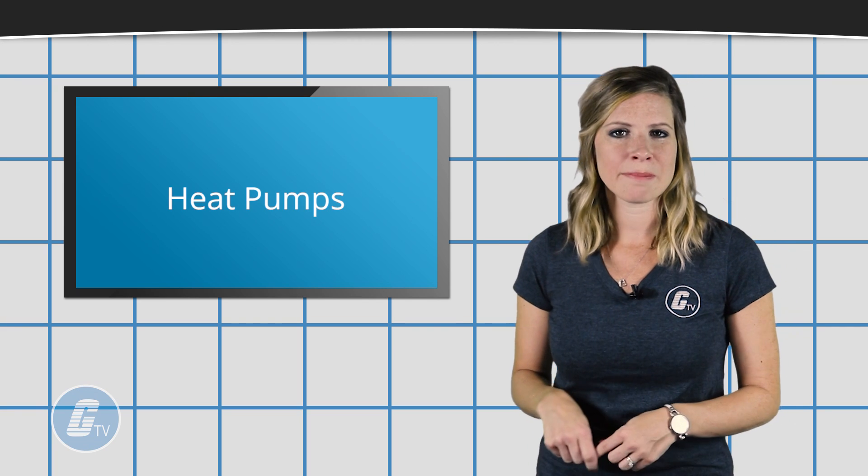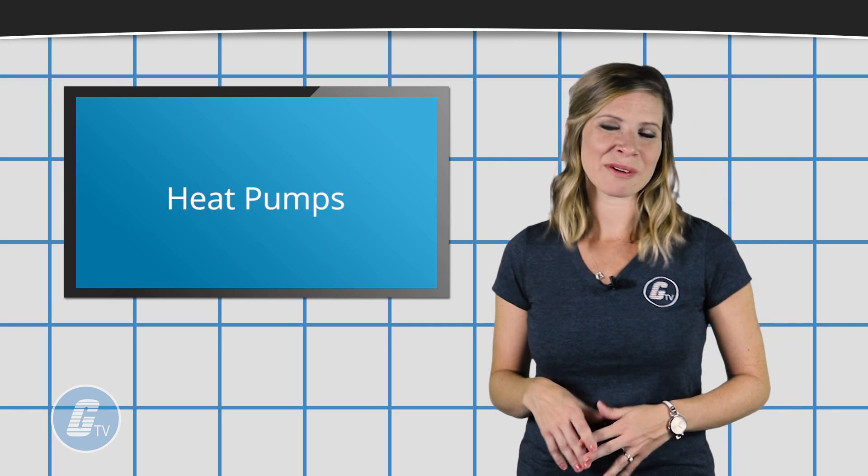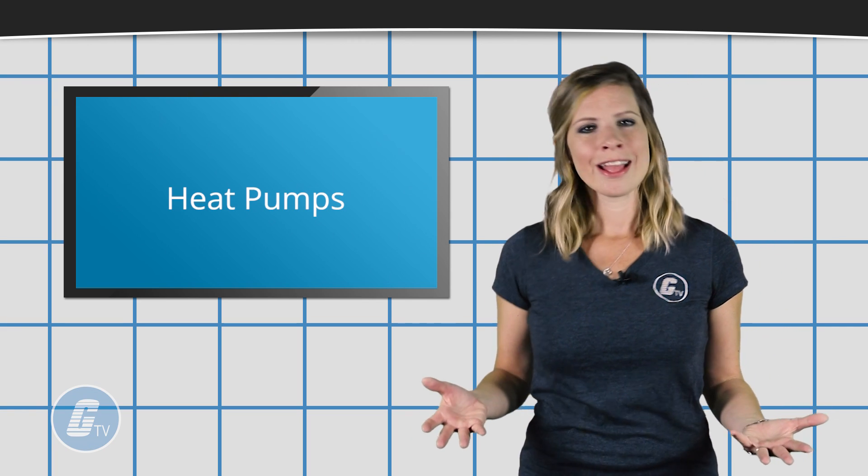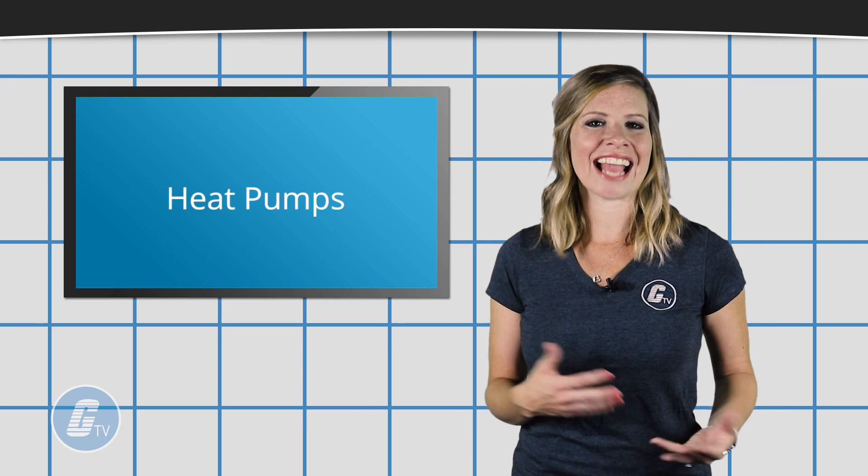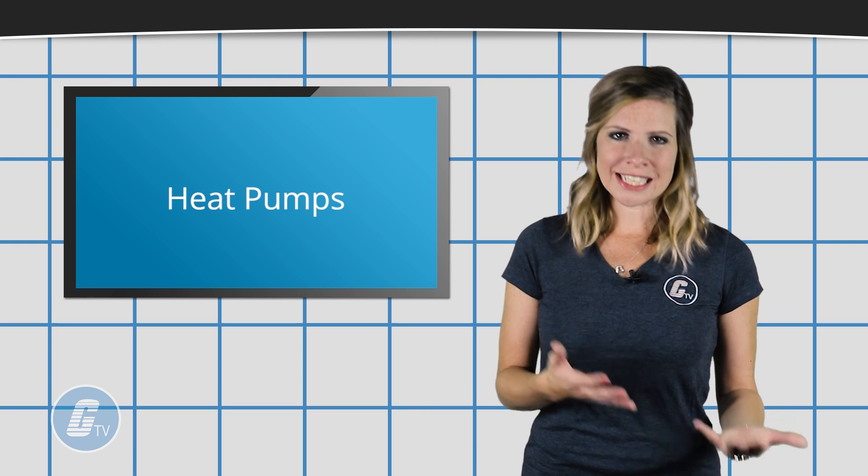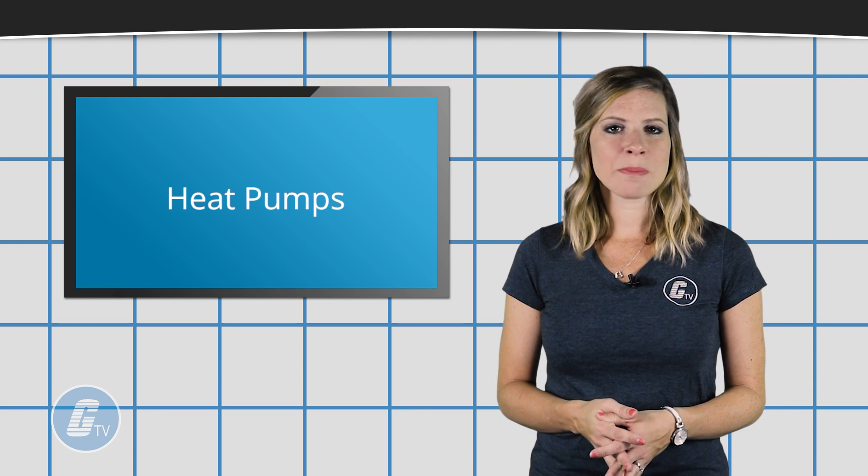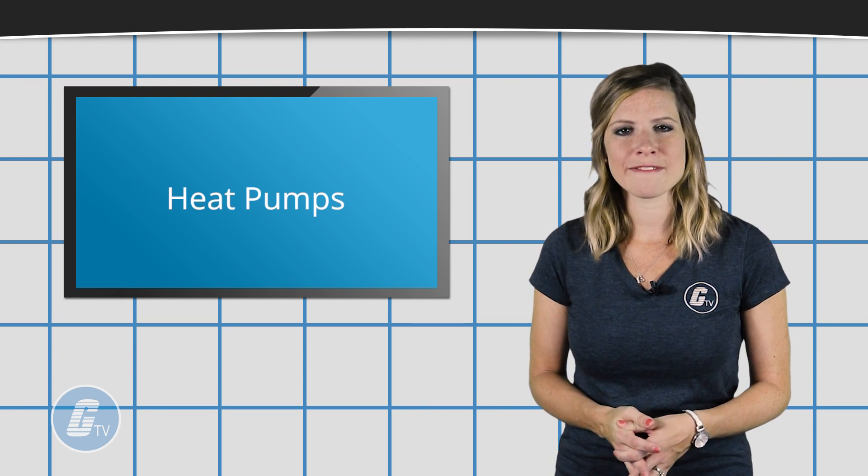When used for heating, heat pumps employ the same basic refrigeration type cycle that an air conditioner or refrigerator uses, though in the opposite direction, instead releasing heat into the conditioned space instead of the surrounding environment.